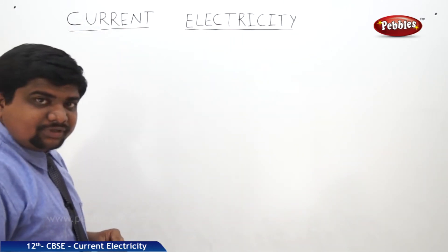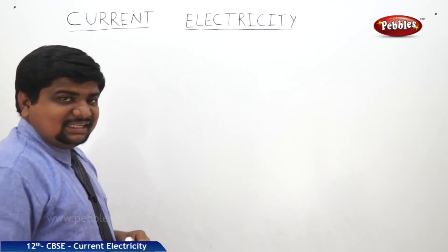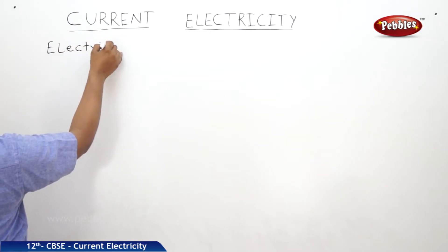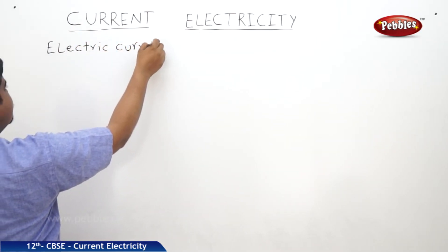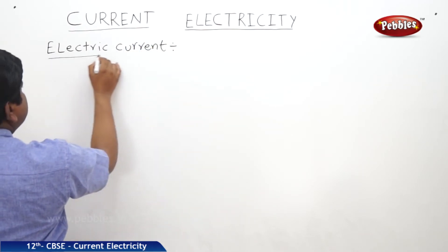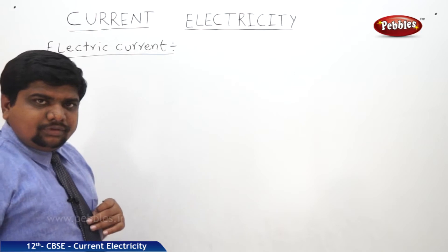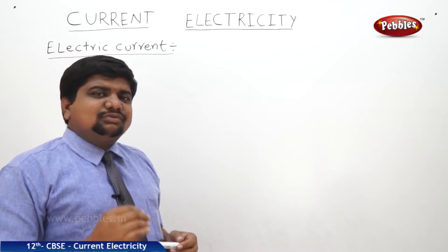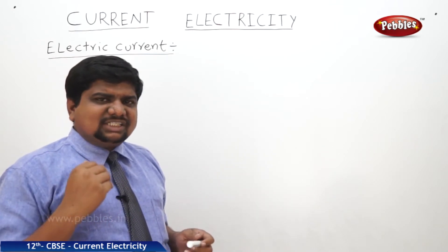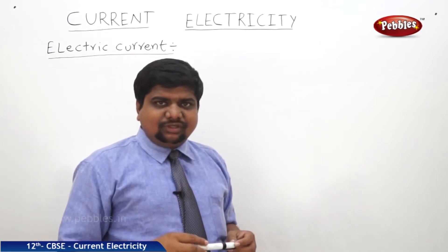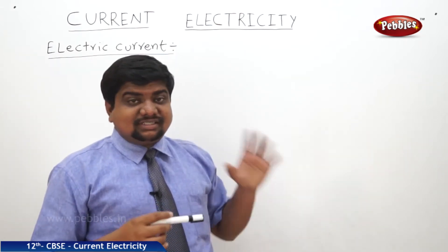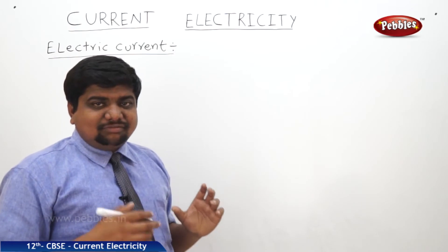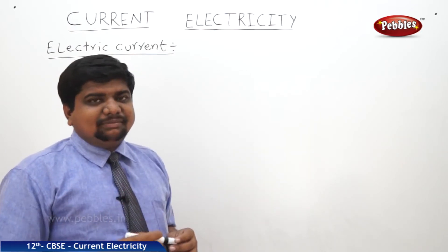So, current electricity. There are many materials which can transfer charge and current through them. Materials which can respond towards the electric field are called conductors; those which cannot respond are insulators. But some materials can respond towards the electric field and pass charges and currents with respect to temperature — those are said to be semiconductors.